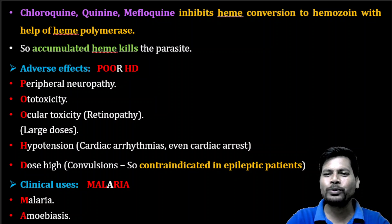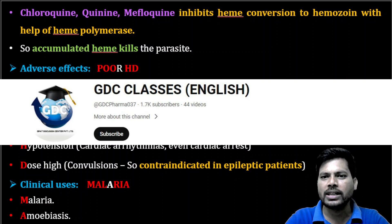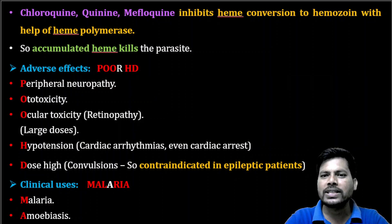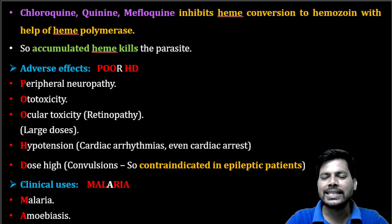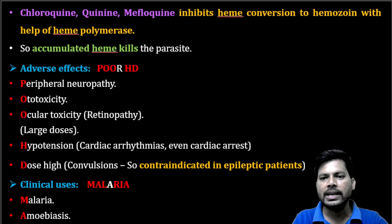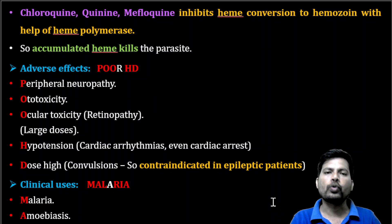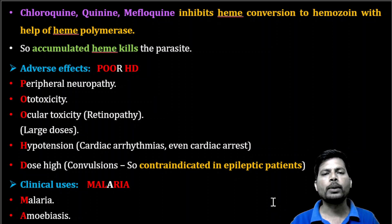Hello pharma aspirants, welcome to GDC English Classes. In this session we are going to discuss the adverse effects and clinical uses of chloroquine with tricks, meaning mnemonics. Chloroquine is an anti-malarial drug; chemically it is a 4-aminoquinoline and is a commonly used anti-malarial drug.